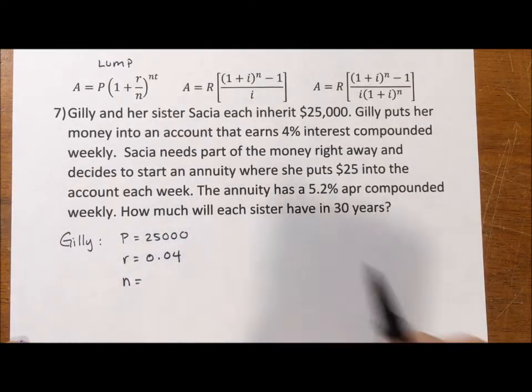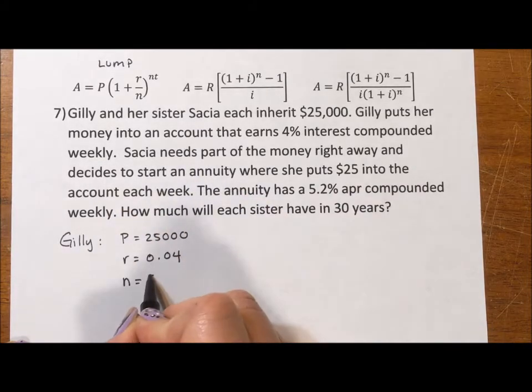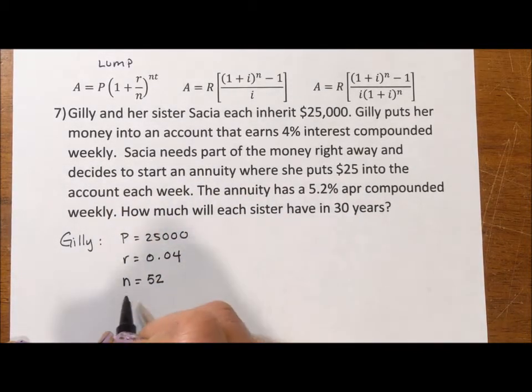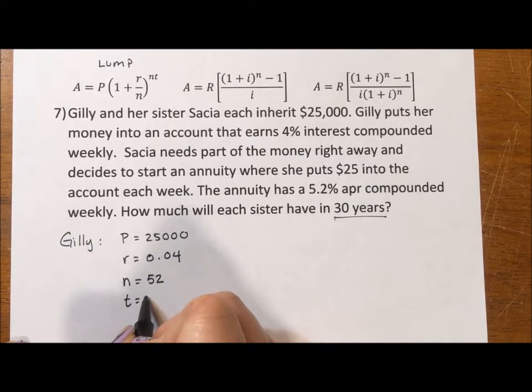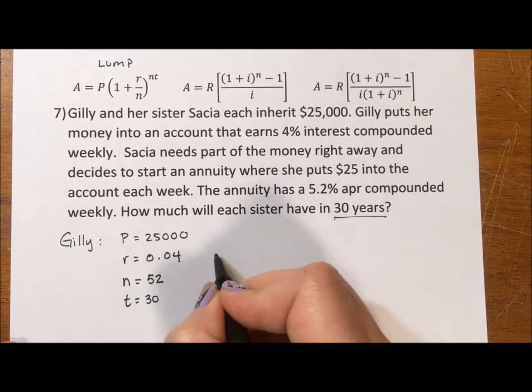N, number of times that the interest accrues each year, it's weekly, so that's 52 times a year. And T, the number of years, is 30. So what this equation means, she invests $25,000.